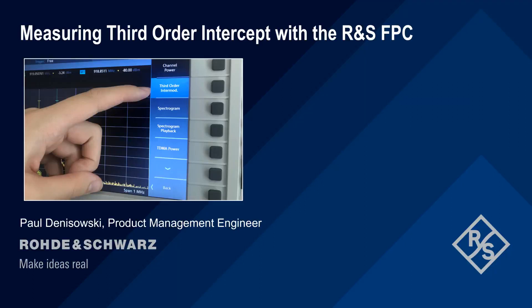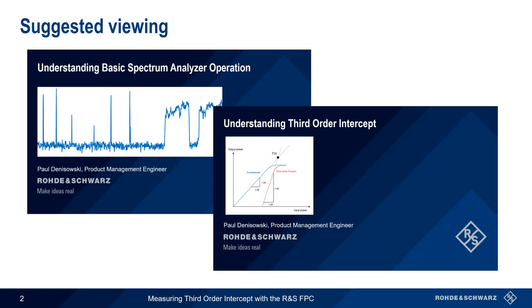Hello, and welcome to this presentation: Measuring Third-Order Intercept with Rohde & Schwarz FPC. In this short presentation, we'll guide you through making third-order intercept measurements using a Rohde & Schwarz FPC series spectrum analyzer. This presentation assumes a familiarity with basic spectrum analyzer operation and an understanding of third-order intercept. If you're unfamiliar with these topics, you might want to watch the presentations 'Understanding Basic Spectrum Analyzer Operation' and/or 'Understanding Third-Order Intercept' before beginning this presentation.